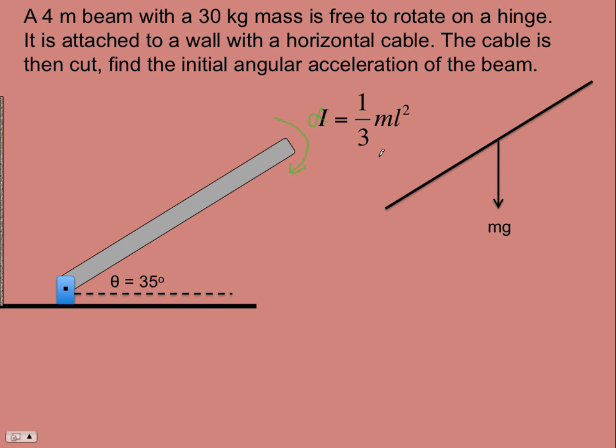We will sum the torques about the hinge so those forces don't matter. Notice now I have clockwise positive because that's the way the beam's going to go. Let's make it so everything's positive. If this is theta here, we know that this would be 90 minus theta.